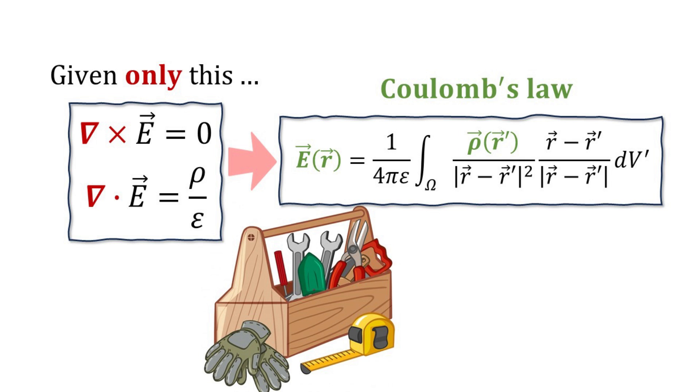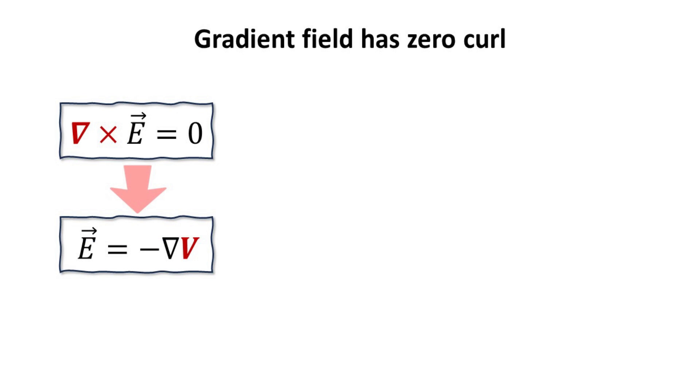Of course, we would need to rely on a few well-known mathematical tricks in our toolbox. One such mathematical trick that is crucial for solving this problem is the idea that a vector field with zero curl can always be expressed as the gradient of a scalar field.